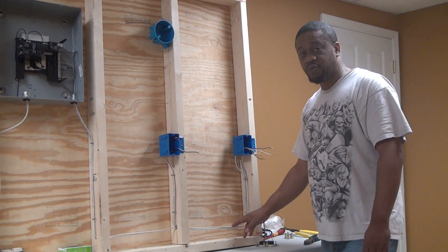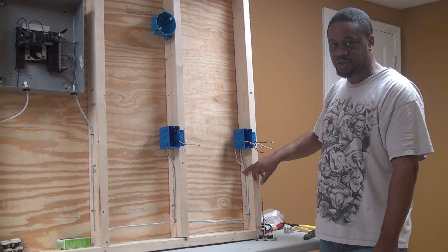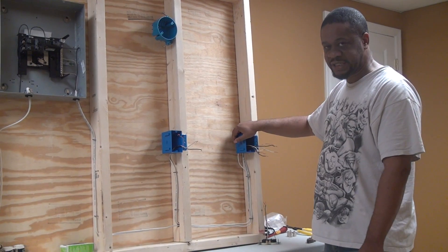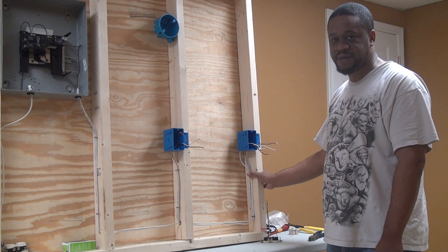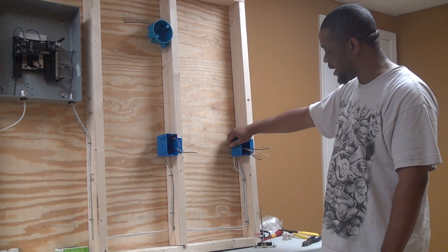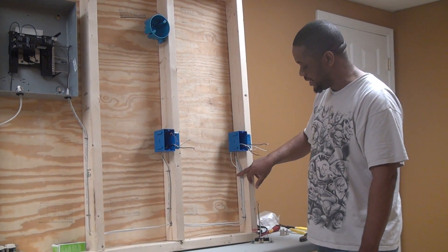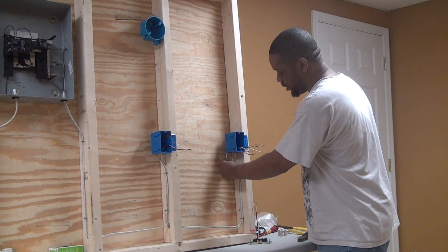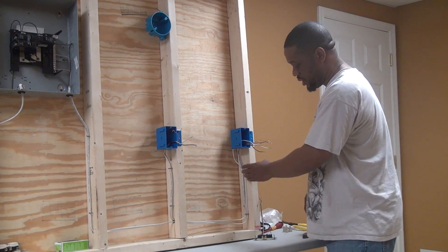When you're running your Romex cable, you want to put a strap every four feet. The code requires four and a half, but I'm going to tell you four. When you're using plastic boxes, you want to make sure that you have a Romex strap within eight inches of your box. The code says 12 inches, but for plastic boxes, you want to maintain a strap within eight inches of your box, mainly because you just have knockouts in there and there's nothing really holding it.